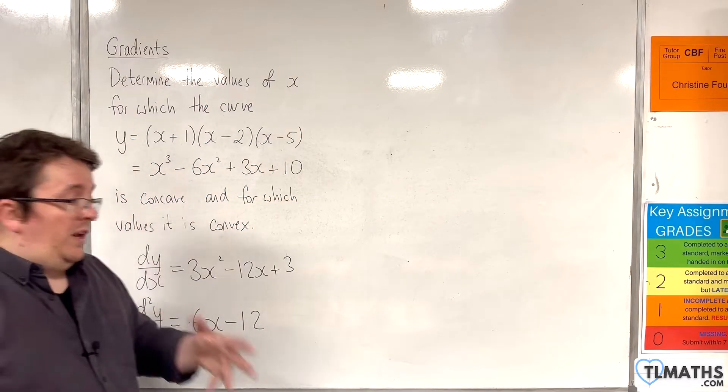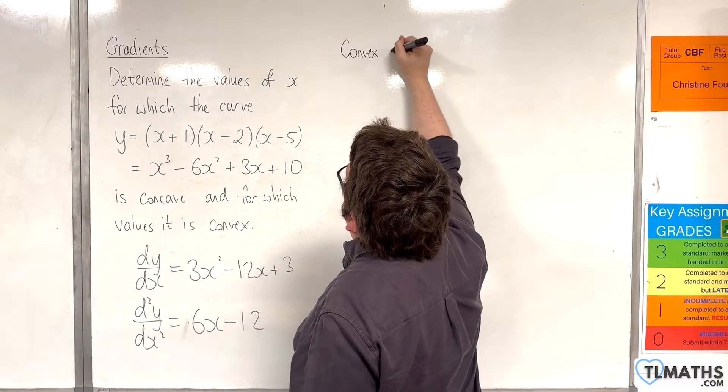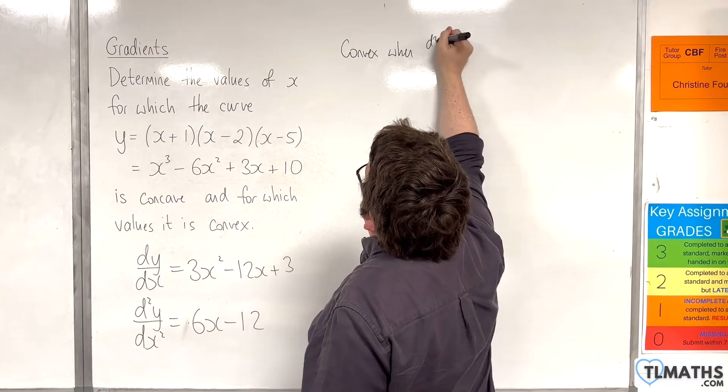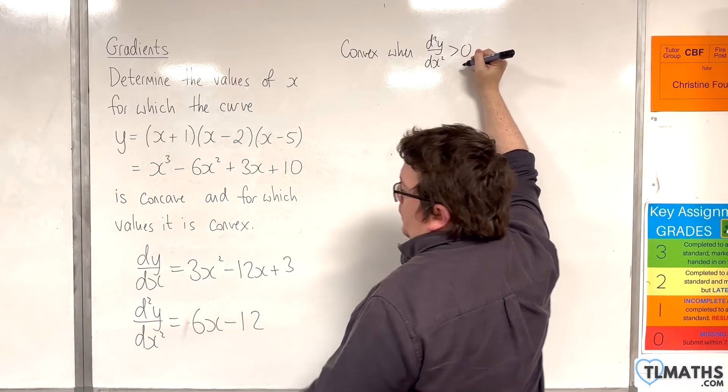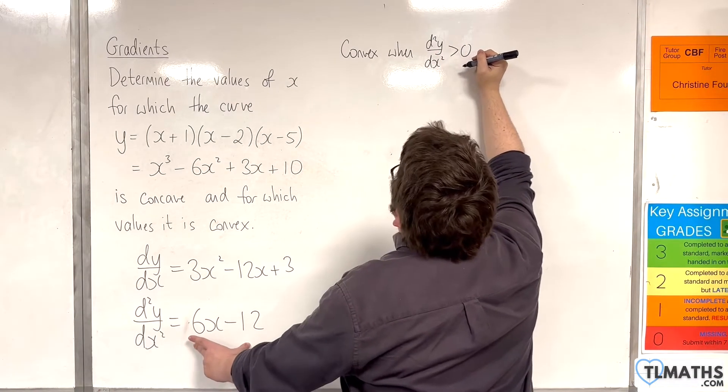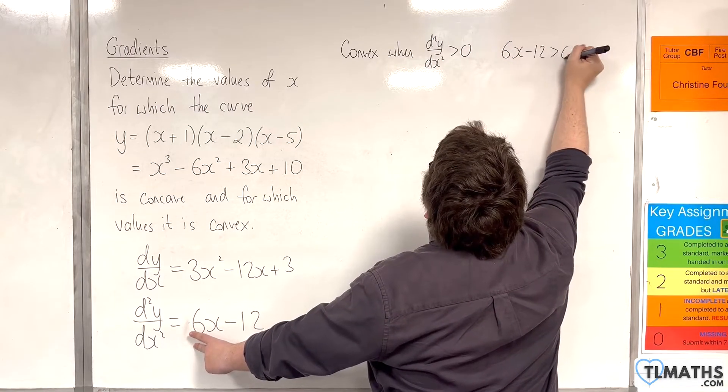Now, we've seen previously that a curve is convex when the second derivative is positive. So, if we put our second derivative to be greater than 0, so 6x - 12 is greater than 0,